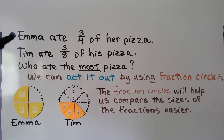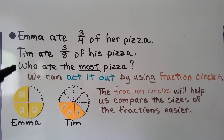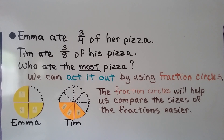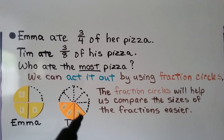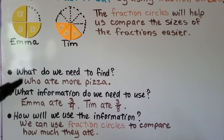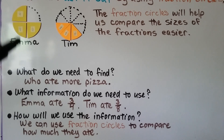Emma ate three-fourths of her pizza. Tim ate three-eighths of his pizza — they each had their own pizza. Who ate the most pizza? We can act it out by using fraction circles. A whole one would make a whole circle. Emma has three one-fourth pieces — that's three-fourths that she ate. Tim has three one-eighth pieces — that's three-eighths that he ate. Fraction circles help us compare the sizes of the fractions easier. We need to find who ate more pizza, using the information that Emma ate three-fourths and Tim ate three-eighths. We can use fraction circles to compare how much they ate.